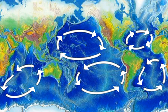The boundary current of the North Atlantic gyre is the Gulf Stream, of the North Pacific gyre the Kuroshio Current, of the South Atlantic gyre the Brazil Current, of the South Pacific gyre the East Australian Current, and of the Indian Ocean gyre the Agulhas Current.